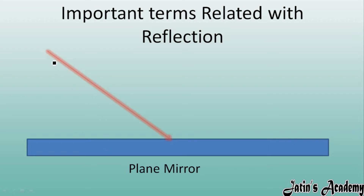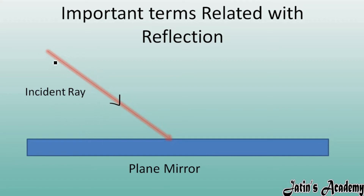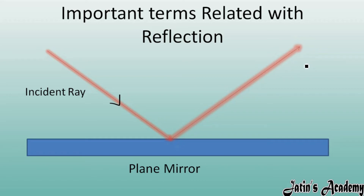Whatever light ray is going to strike on a plane mirror from outside is known as the incident ray. After striking on the plane mirror, the light ray will reflect back or bounce back in the same medium, and this bounced-back light is known as the reflected ray.